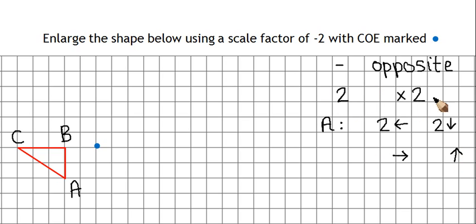Now the second bit means that we need to multiply each of these by 2. So rather than go across 2, we're going to be going across 4, because that's 2 lots of 2. And the same here, 2 times 2 is 4. So my new A is going to be 4 right and 4 up.